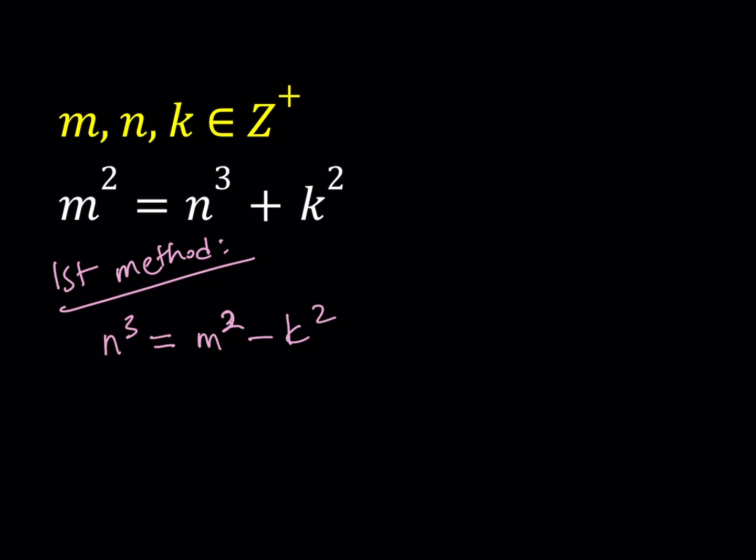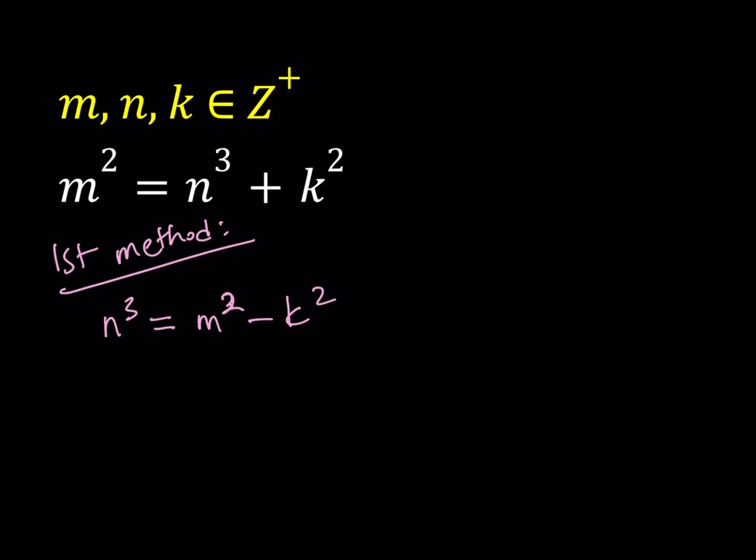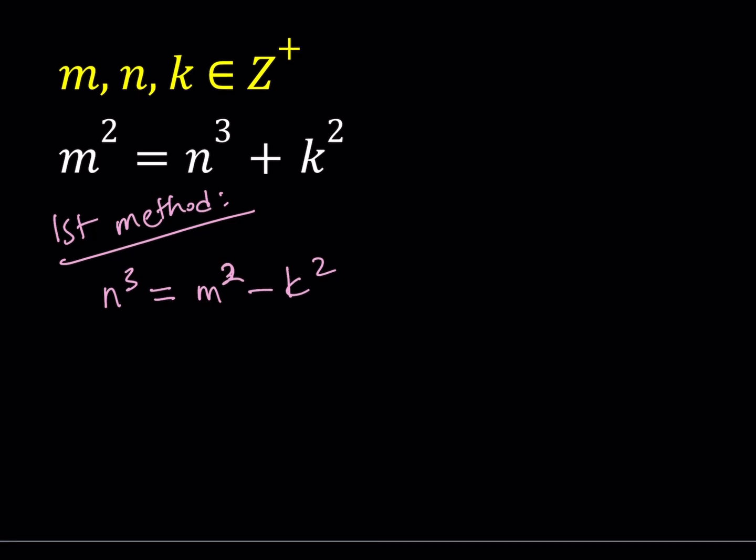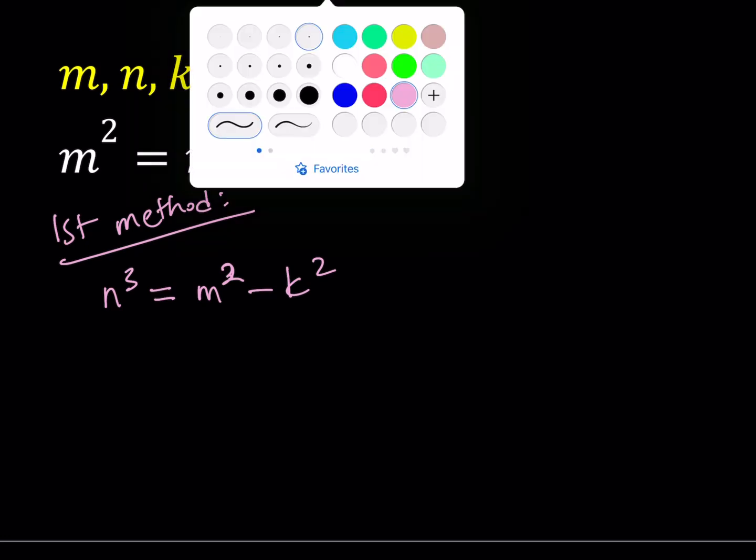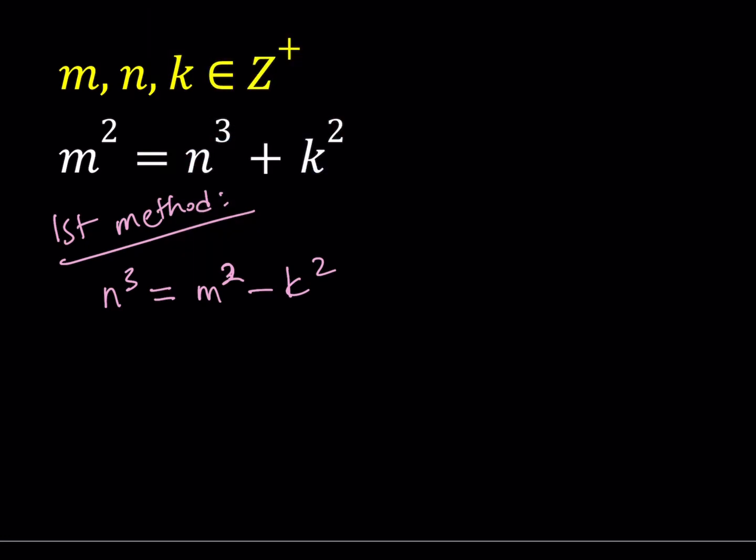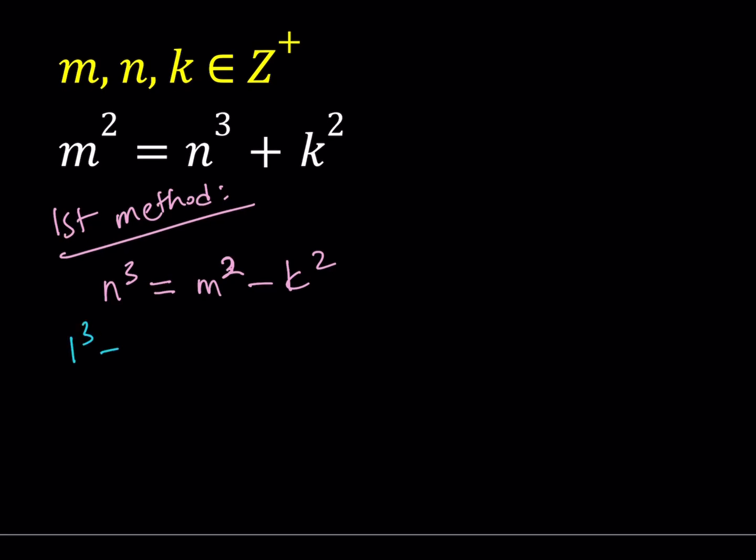Now I have an n cubed, so the question is, can we write a perfect cube as a difference of two squares? The answer is yes, because this equation has integer or positive integer solutions. So here's what we're going to do. I'm going to take advantage of an identity here. Instead of n cubed, I can just write the following. Consider the sum of integer cubes, the consecutive integers: 1 cubed plus 2 cubed plus dot dot dot all the way up to n cubed.